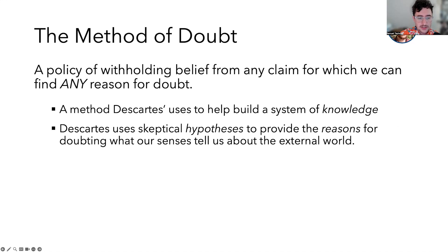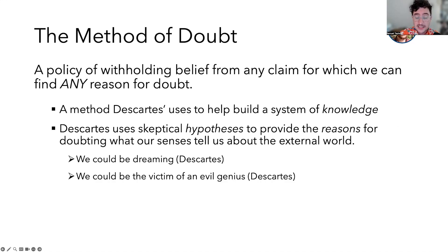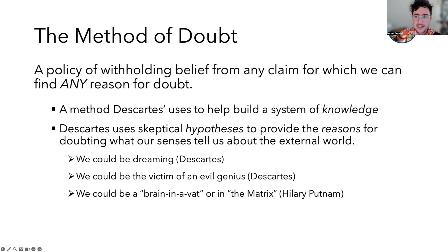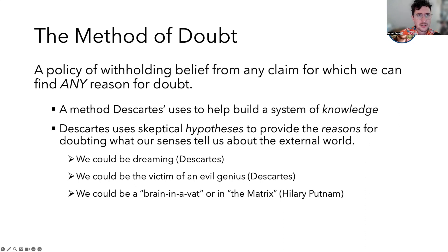Some of these skeptical hypotheses include that we could be dreaming, or these senses could be coming to us from an evil genius. Some people bring more high-tech skeptical hypotheses, like the idea that we could just be a brain sitting in a vat with wires hooked up to a computer stimulating our brain to make it feel like we're interacting with the world. This was originally introduced by Hilary Putnam, but it turns out to be the plot of the popular movie from the late 1990s, The Matrix. Our focus in this video is not to evaluate Descartes' use of these particular skeptical hypotheses — our focus is on the method overall. The next video will focus on some of these skeptical hypotheses themselves.